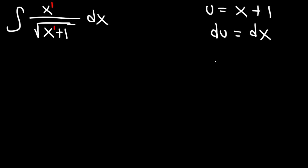So if we subtract both sides by 1 in this expression, we'll have that u minus 1 is equal to x.